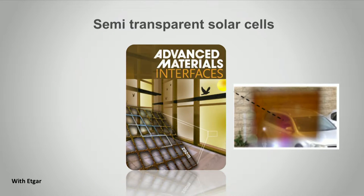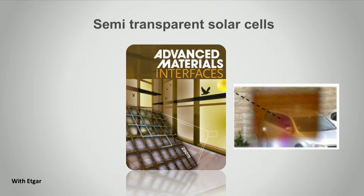We can also make transparent solar cells. Imagine buildings where the windows are not really windows — they are transparent solar cells, so you can see through them. Made by printing, by self-assembly, and using nanoparticles produced in our lab, also with my collaborator Leo Zedgal.